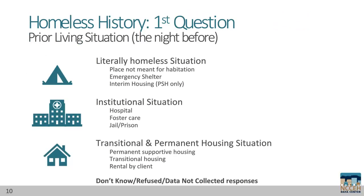Now that we're familiar with the chronic homeless definition, we'll look at data collection for a homeless history. The first question is called prior living situation — this asks which housing situation the client stayed in the night before entering your project. There are three categories: literally homeless, institutional, and transitional or permanent housing situations. Homeless refers specifically to staying on the street or in a place not meant for human habitation or emergency shelter. Institutional situations include hospitals, detox or rehab centers, foster care, and jail or prison.